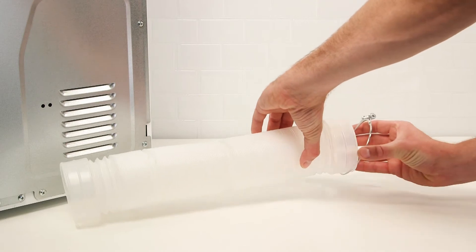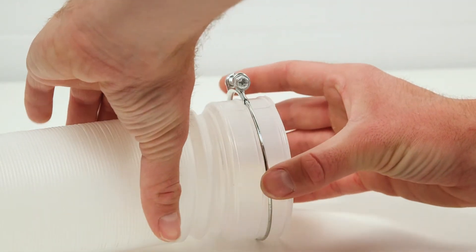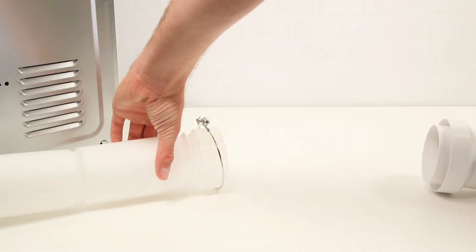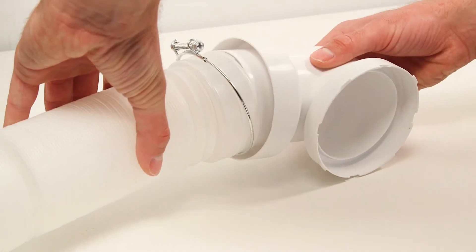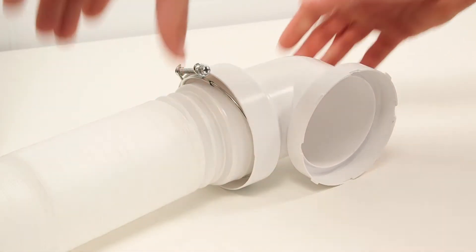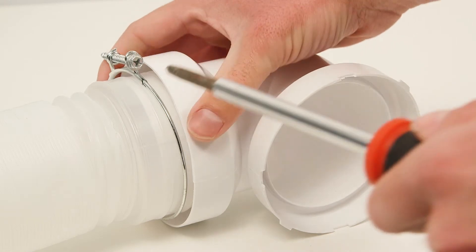Fit the metal ring on the exhaust hose. Next, insert the exhaust connector. Tighten the metal ring with a Phillips screwdriver.